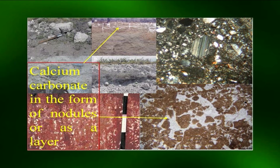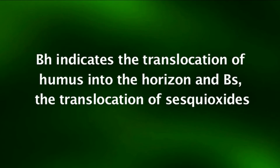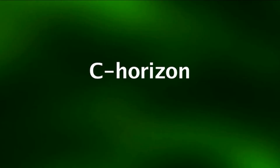Carbonate enrichment occurs when the carbonate precipitates out of downward moving soil water or from capillary action. B horizons may have a number of different subscripts indicative of the nature of the materials that have moved into the horizon. For example, Bh indicates the translocation of humus into the horizon, and Bs the translocation of sesquioxides. These subscripts vary according to the nature of the soil component that has accumulated and also with the nomenclature system of the soil type.